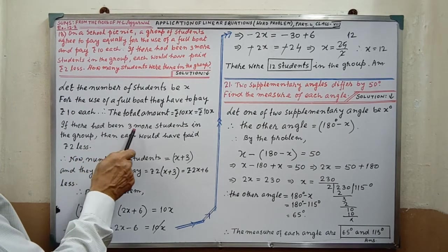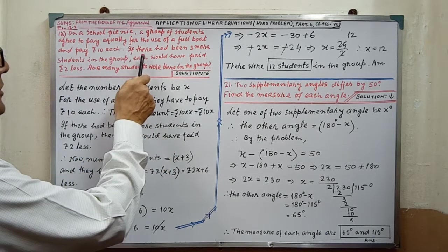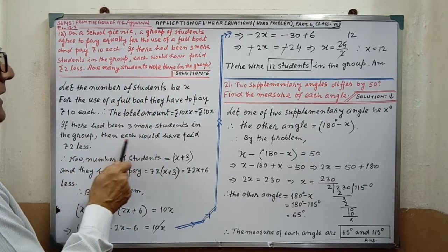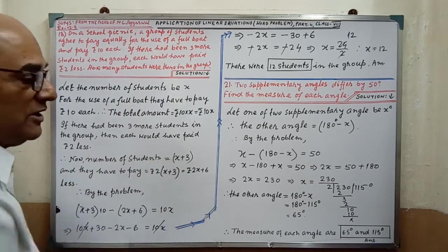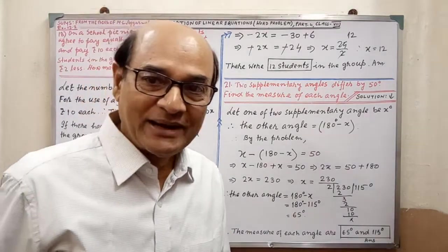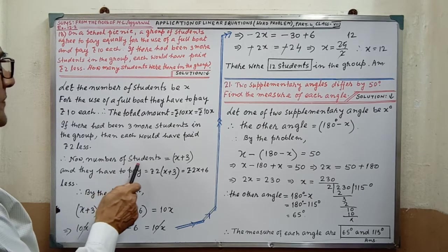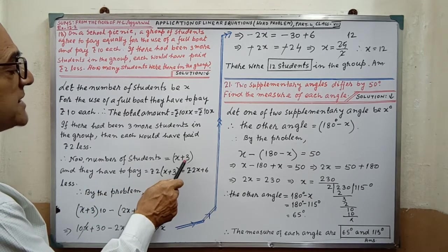And if there had been 3 more students, according to question 3 more students in the group, then each would have paid rupees 2 less. This is why now the number of students, that is x plus 3.